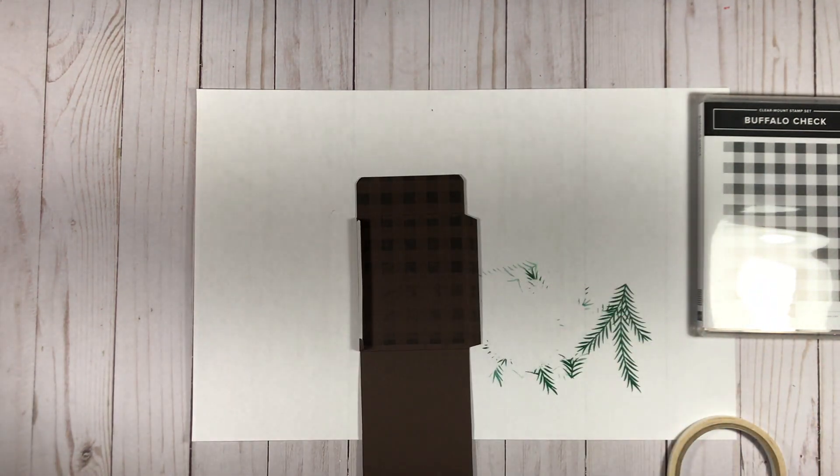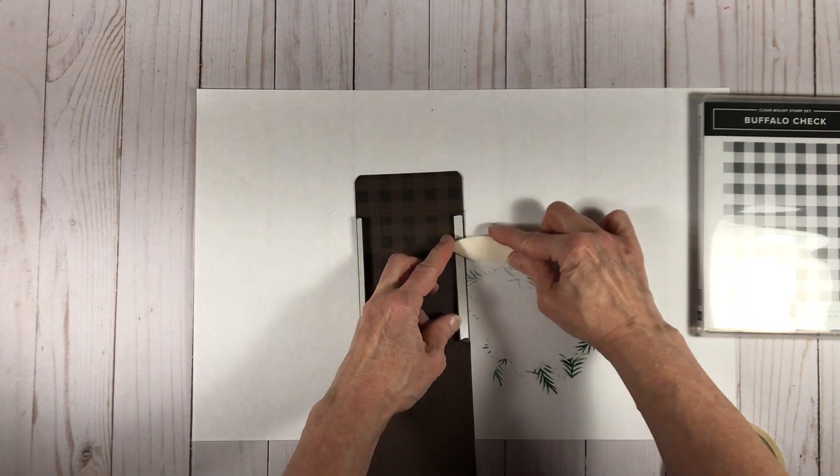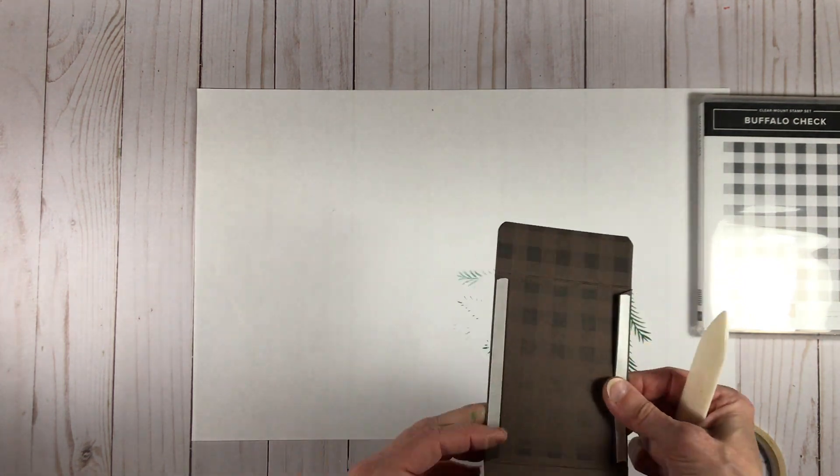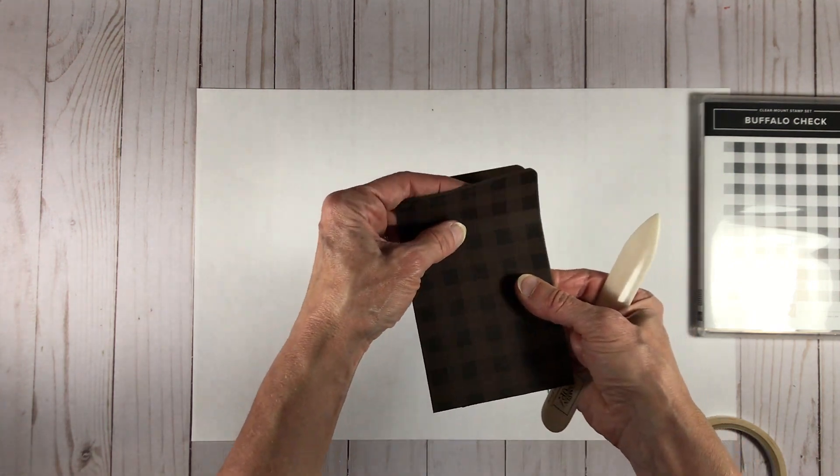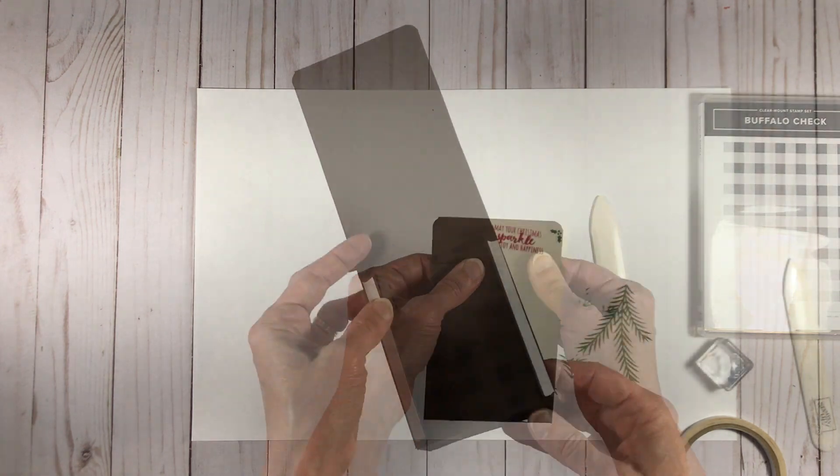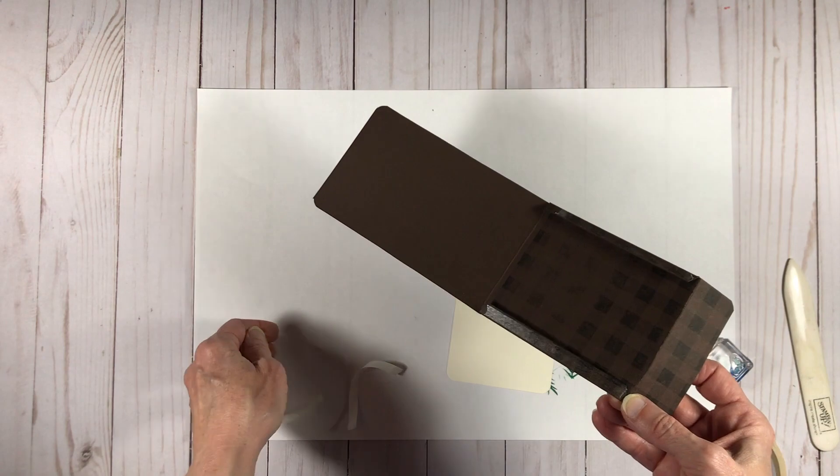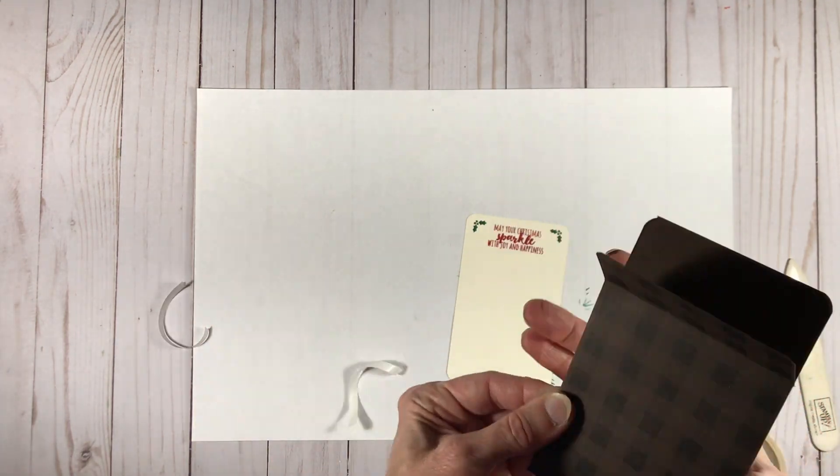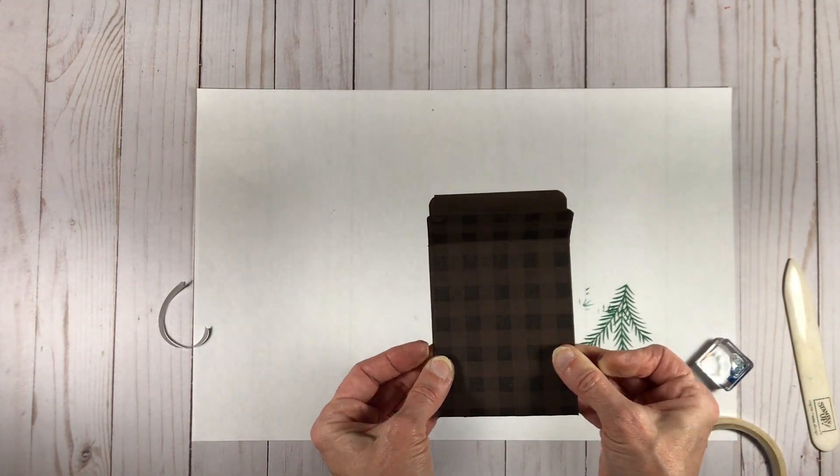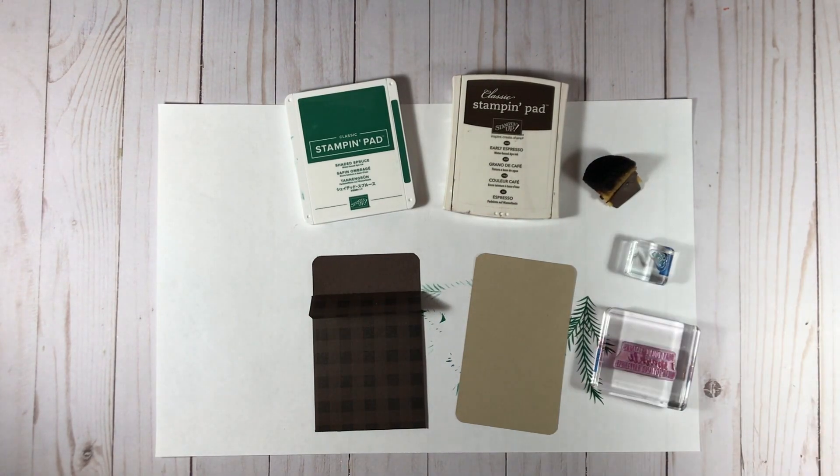So I'm going to now burnish all my edges using my bone folder, make sure it folds up nice and crisply. Next I can pull off the backings of my tear and tape and actually attach the gift card holder together, and it essentially makes a nice little pocket. This could also be used just as a card with an insert in it.